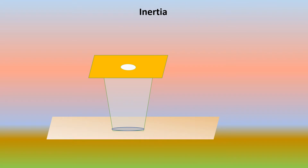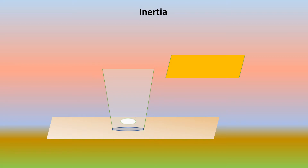Now children, let us perform an experiment. Place a coin on top of a cardboard kept over a glass. Flick the cardboard suddenly. What did you see? The coin which was at rest before the cardboard was pulled falls back into the glass. When you pull the cardboard, the coin shows the tendency to remain at rest — it doesn't move along with the cardboard. It falls back into the glass. This tendency is known as inertia of rest.